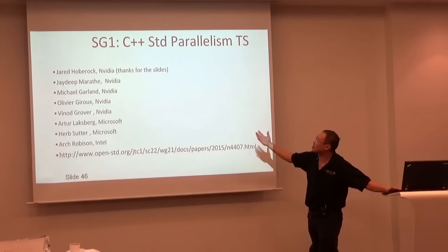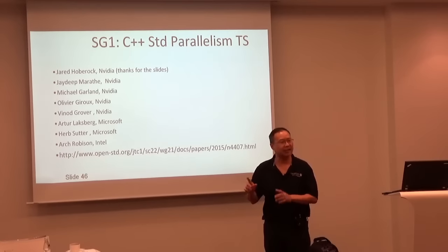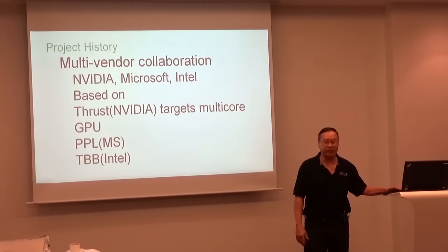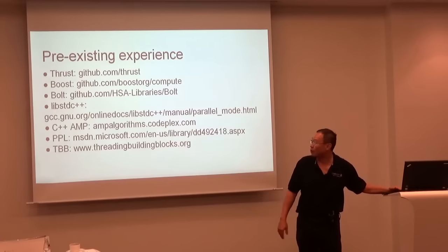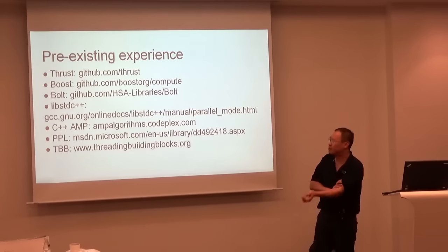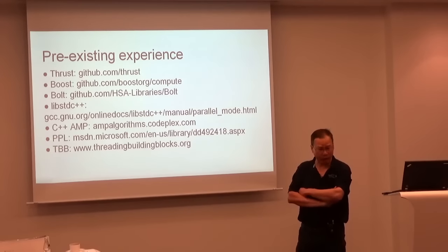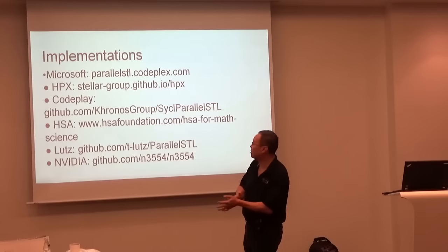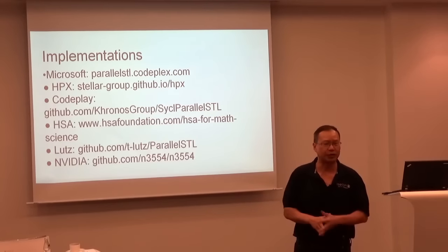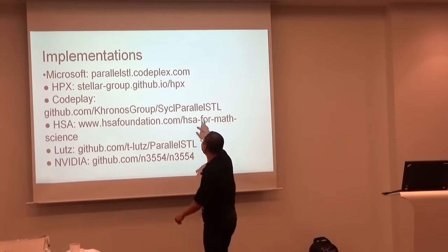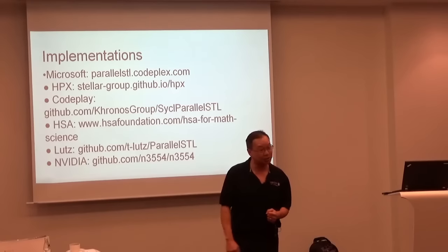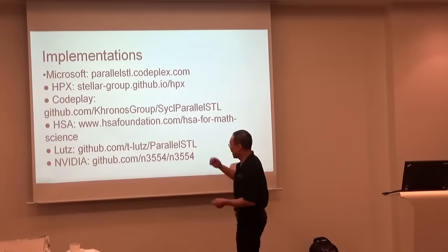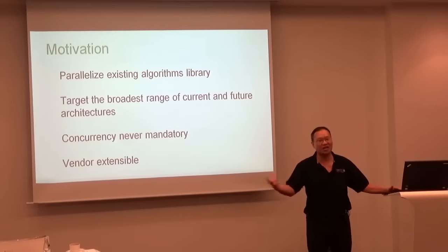Because of that distinction, we have a brand new TS called parallelism. I can almost guarantee this is going into C++17, pretty much as-is. It has a rich project history and is a multi-vendor cooperation case, with pre-existing experience from Thrust, Boost, Bolt, C++ AMP, Parallel Pattern Library, and Thread Building Blocks. Implementations exist through Microsoft Parallel STL, the HPX Stellar Group, and Codeplay's SYCL Parallel STL. HSA Foundation and NVIDIA have also all implemented. That's why it's just going in — I'm almost certain.